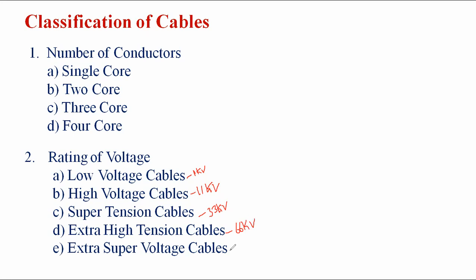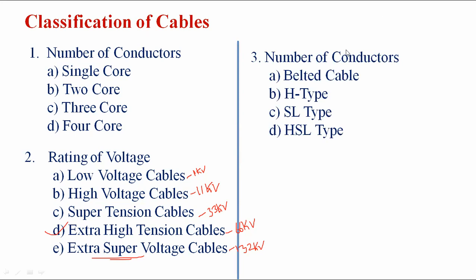Operating voltage up to 132 kV and above is represented as extra super voltage cable. In India, overhead transmission lines currently operate at a maximum of 765 kV. Underground cables are preferred only up to 132 kV.